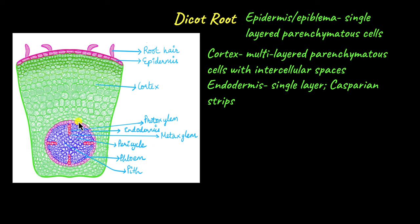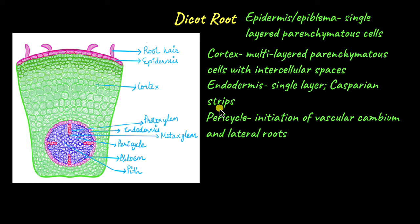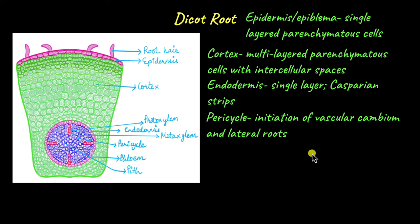The layer of cells below the endodermis is called the pericycle. The pericycle is involved in the secondary growth of the root; in secondary growth, the width of the root increases by the formation of vascular cambium, and the cells of the pericycle are involved in the initiation of vascular cambium. The growth of lateral roots is also from the cells of the pericycle.